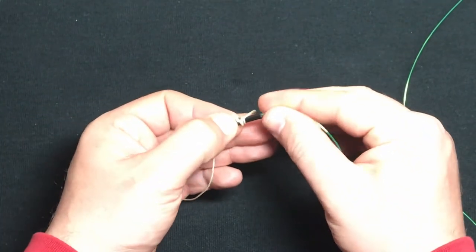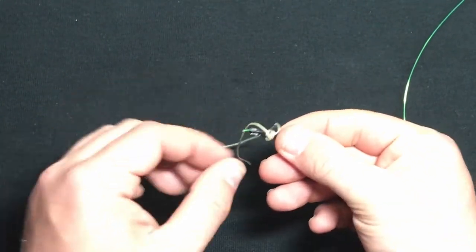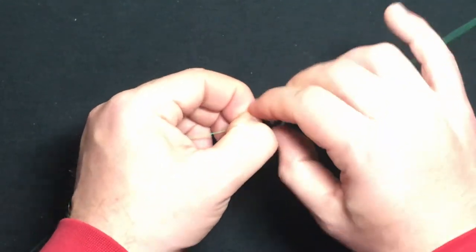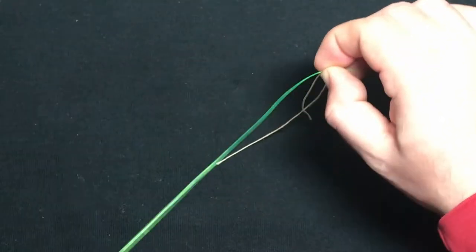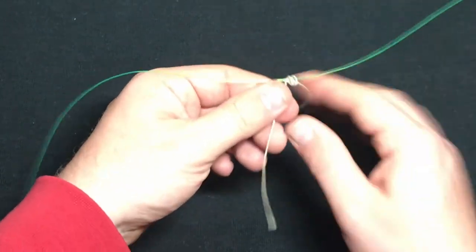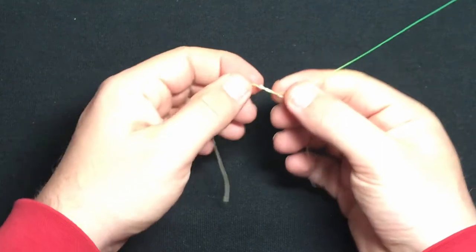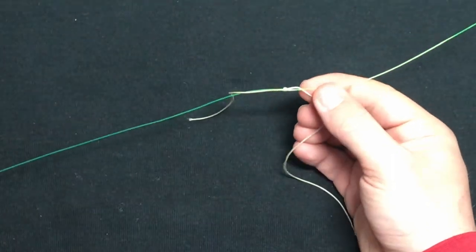And then whenever you want to deploy the knot onto the line, just thread your line through the coffee stirrer, get it to the spot where you want your knot to be, then slide that knot off onto the line and pull it tight. And bam, you've got yourself a stopper knot right on your line within seconds.